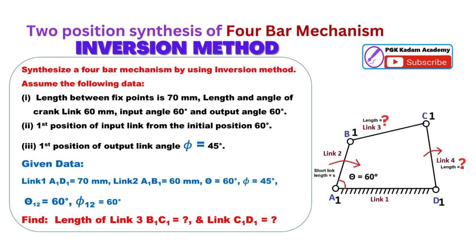Length and angle of crank link 60 millimeters, input angle 60 degrees and output angle 60 degrees. First position of input link from the initial position 60 degrees. First position of output link angle from the initial position 45 degrees.